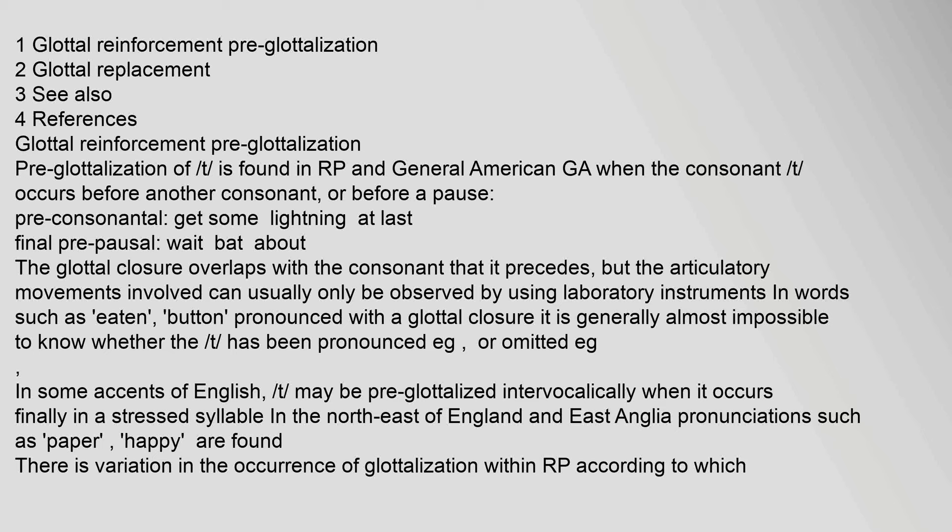Glottal reinforcement and pre-glottalization of T is found in RP and General American (GA) when the consonant T occurs before another consonant or before a pause — pre-consonantal, as in 'get some' or 'lightning' — or at last final pre-pausal position. The glottal closure overlaps with the consonant that it precedes, but the articulatory movements involved can usually only be observed using laboratory instruments, in words such as 'eaten' and 'button', pronounced with a glottal closure.